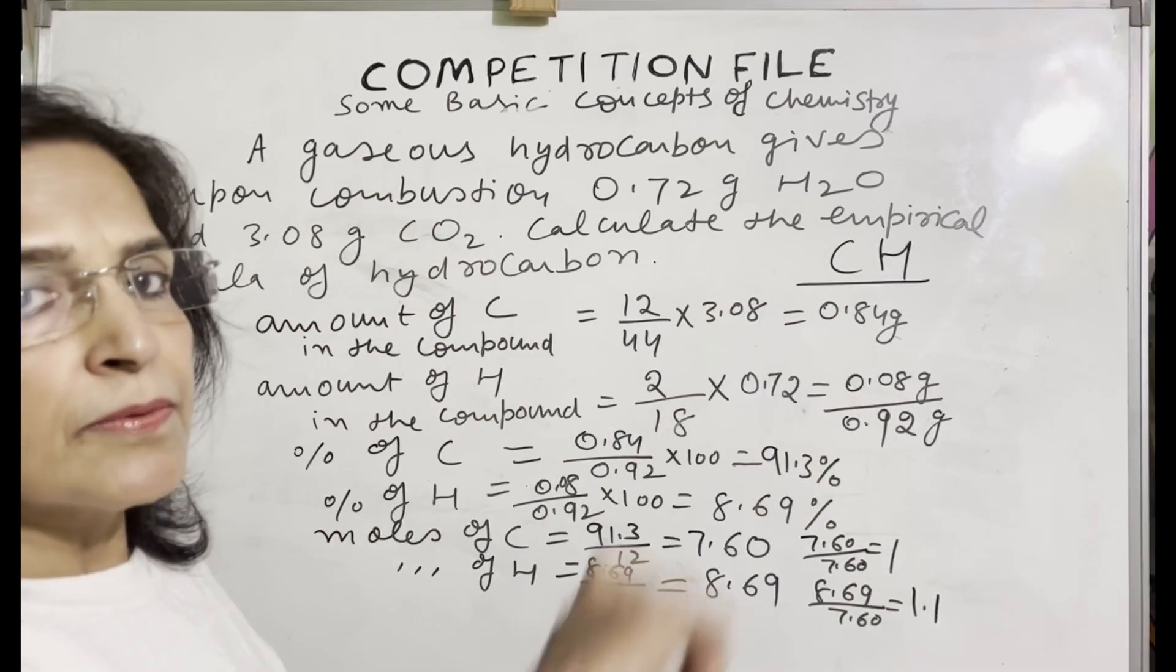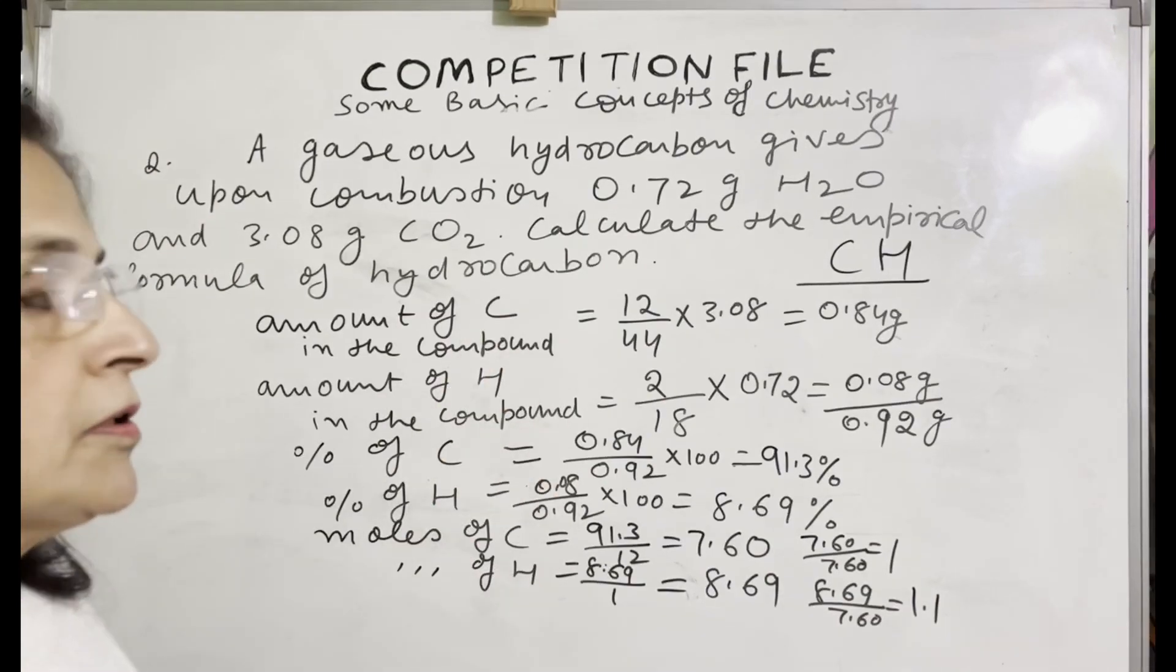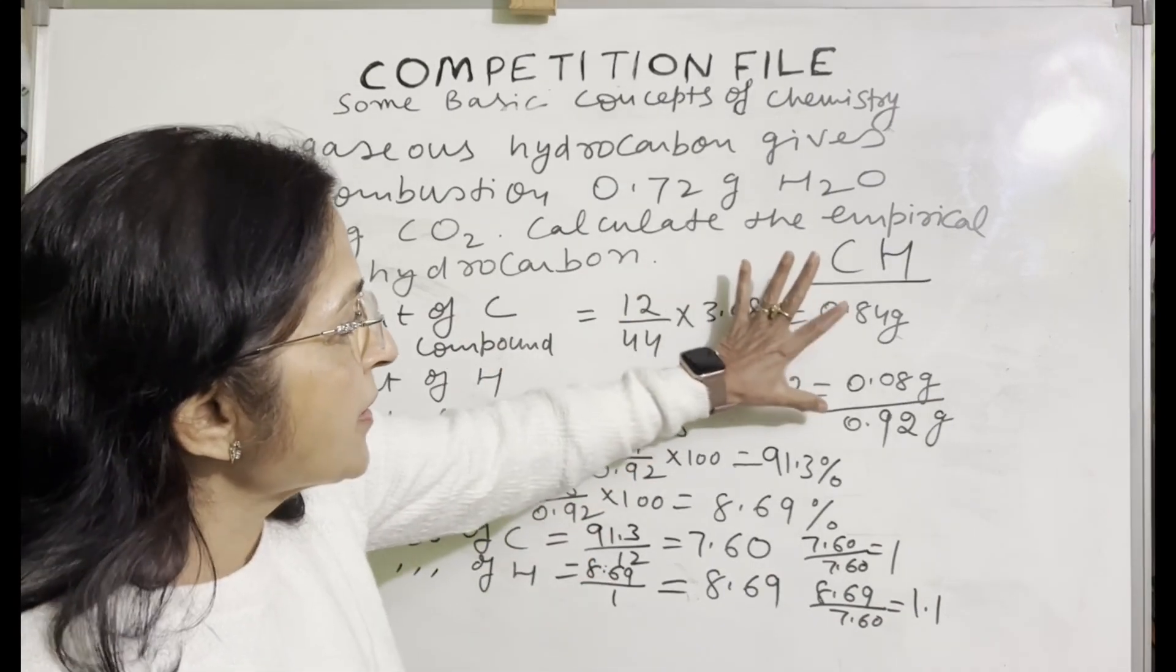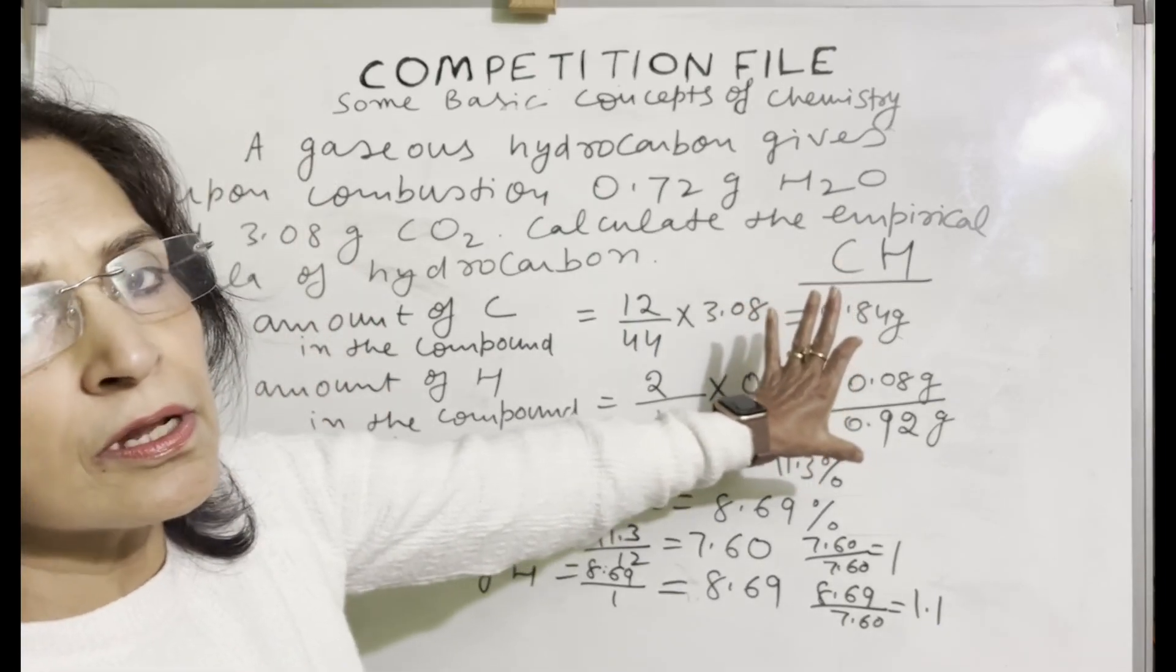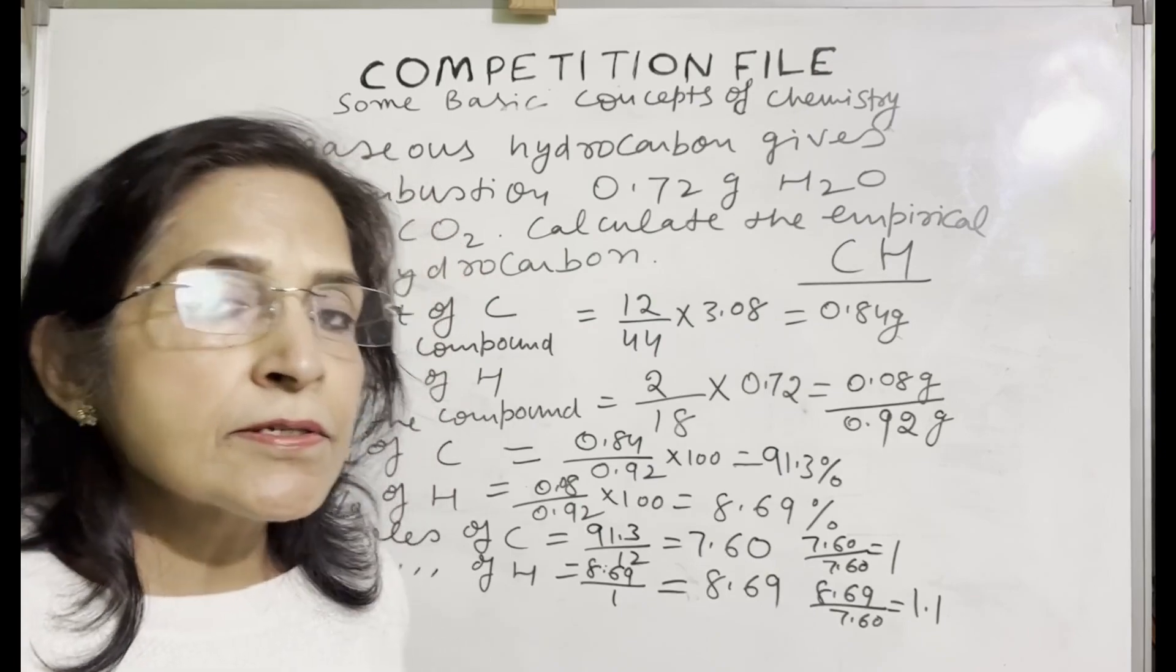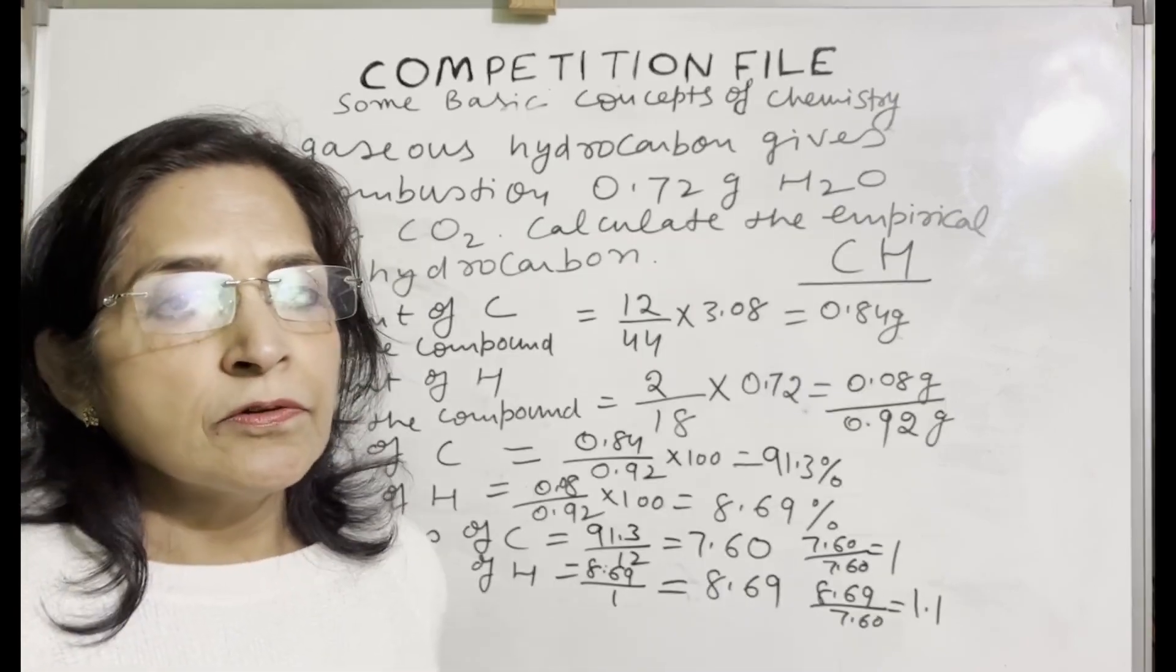You can also do this in a tabular form when there are different steps, okay? Clear? Just a small trick here that after finding carbon and hydrogen, the total mass you have to find from these values only. Okay students, you should practice this type of questions. See you in the next video. Bye bye.